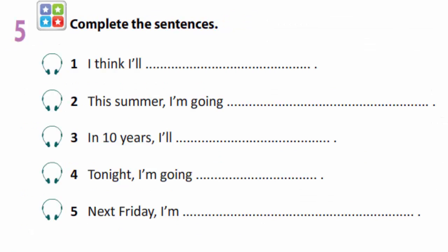Exercise five. You are to complete the sentences. Listen to the models: I think I'll have an early night tonight. This summer, I'm going to go on holiday with my friends. In ten years, I'll have a family of my own. Tonight, I'm going to go to the cinema. Next Friday, I'm going to go to a party with my friends. You are to write down this exercise in your copybooks.